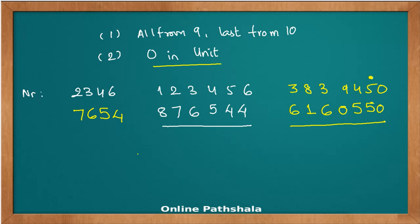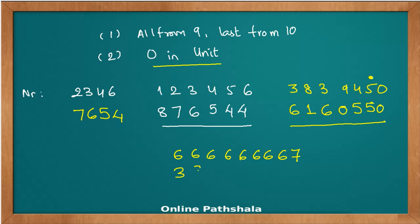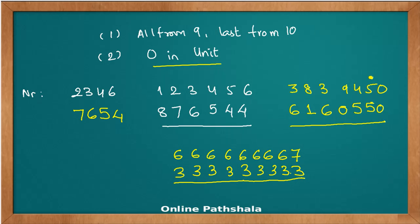Before we finish, here is a unique example: the number 66666666666667. What is its complement? Applying all from 9 and last from 10, since 9 minus 6 is 3 for every digit and 10 minus 7 is 3 for the last, all the digits of the complement are 3s. With that we complete our discussion on complements. In coming videos we will see how to use complements to make multiplications much faster.